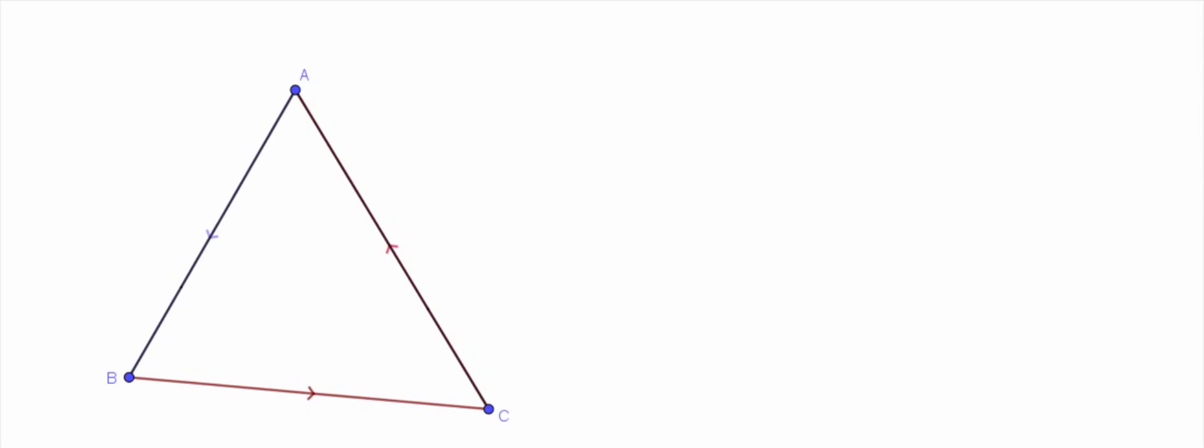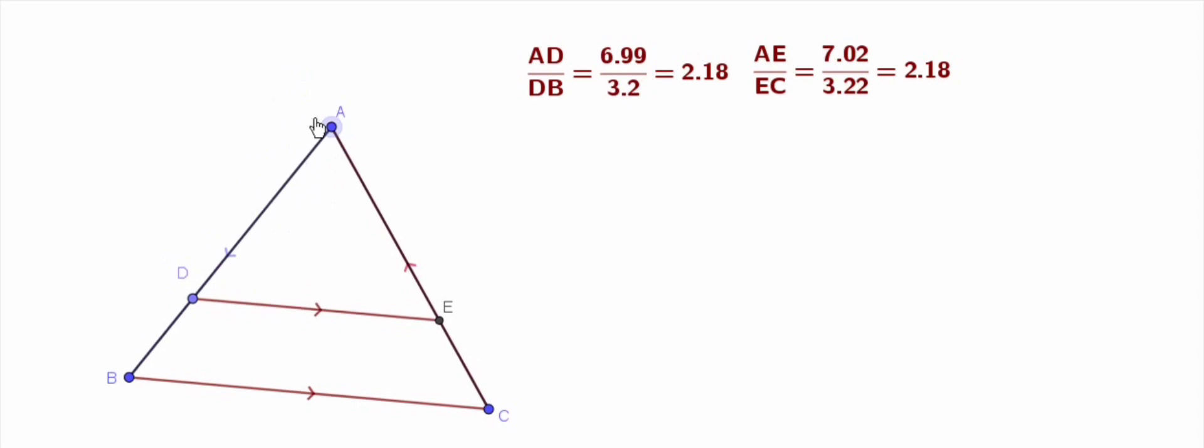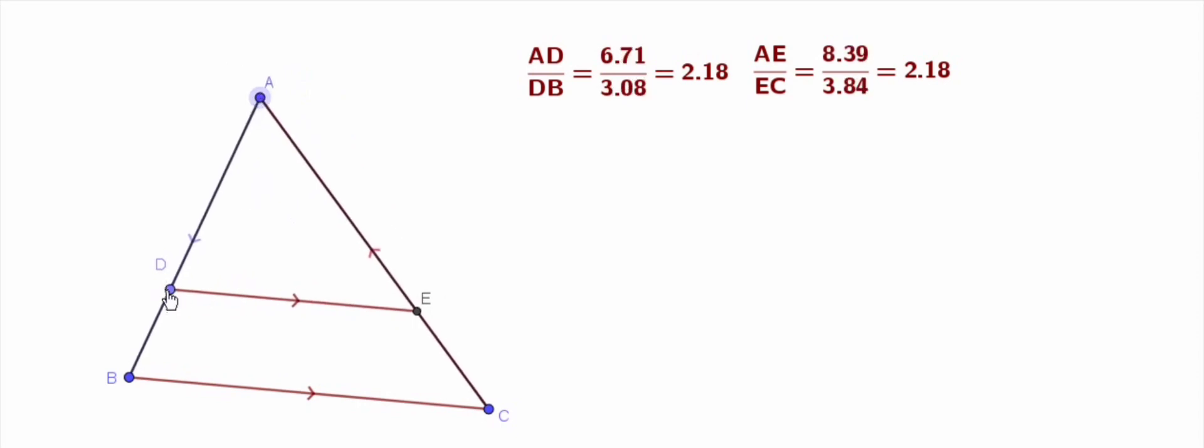Let's prove the theorem practically first, that is by actual measurement. Take triangle ABC and a line DE drawn parallel to BC. Here the measurements AD by DB and AE by EC are equal.